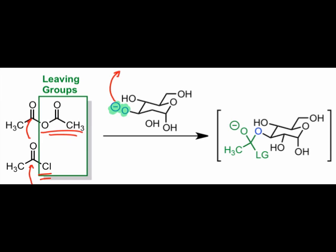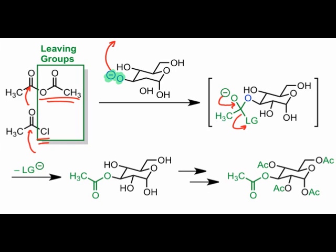However, after beta elimination of the leaving group, a neutral product containing a new ester results. This process occurs unselectively to give sugars in which every hydroxyl group becomes part of an ester.